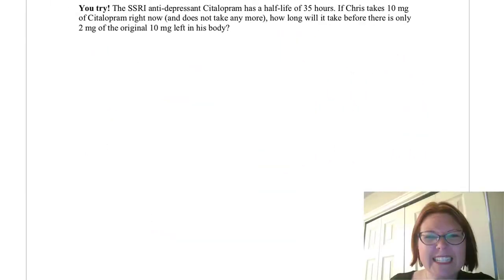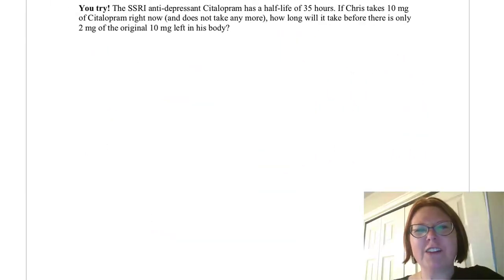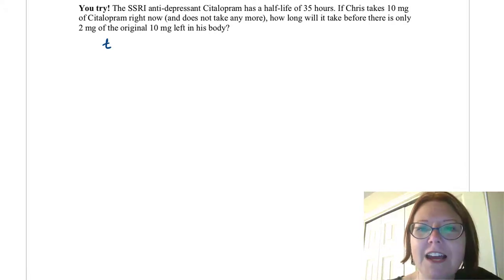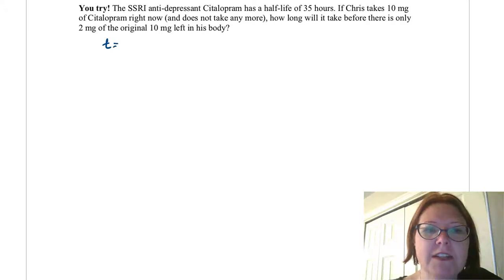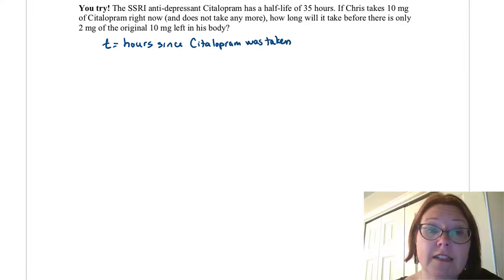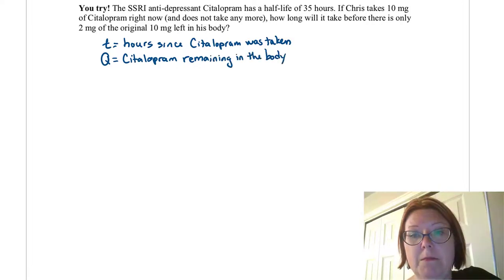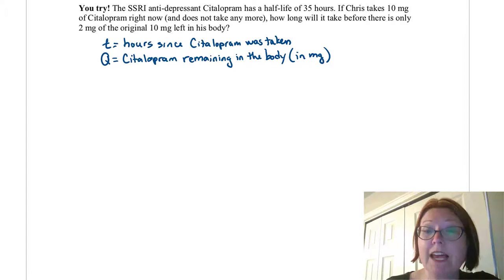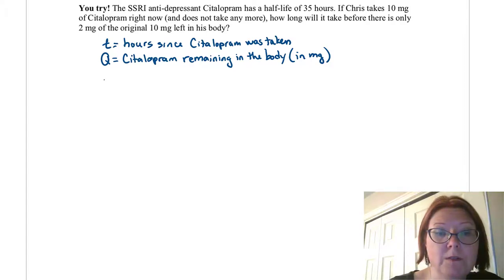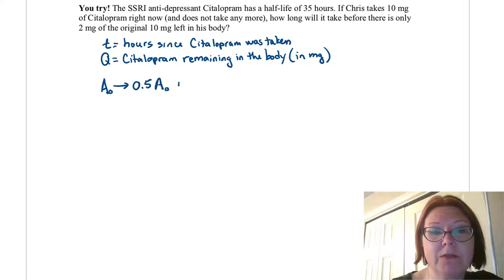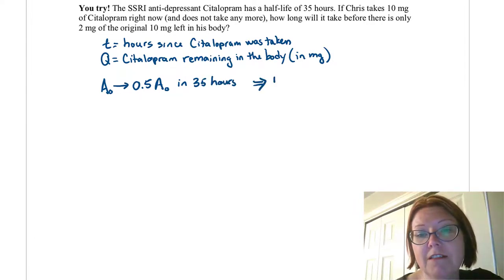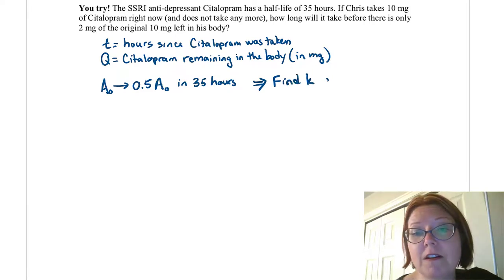Okay, we're back. Let's start by declaring a couple of variables, because there's a lot of information in this problem. The time in this problem is given in hours, so we're going to let T be the hours since the citalopram was taken. I'm going to let Q be the citalopram remaining in the body, in milligrams. We know citalopram has a half-life of 35 hours, so it goes from capital A sub-zero to 0.5 capital A sub-zero in 35 hours.